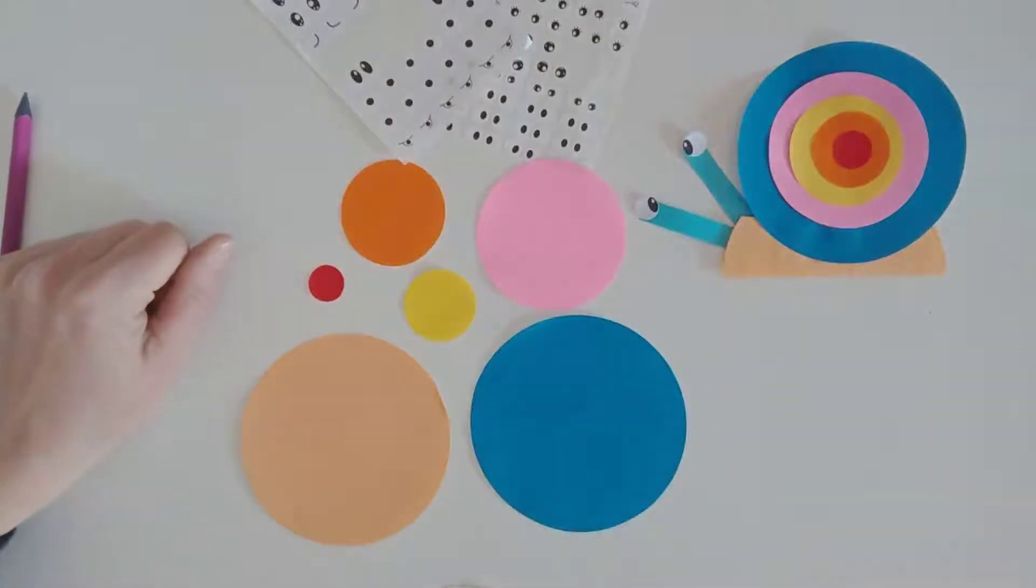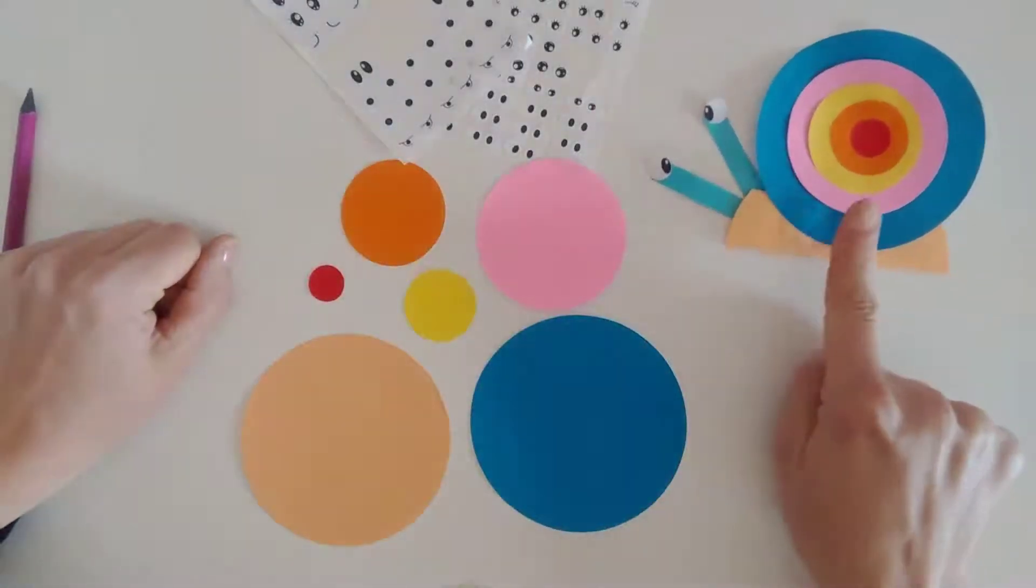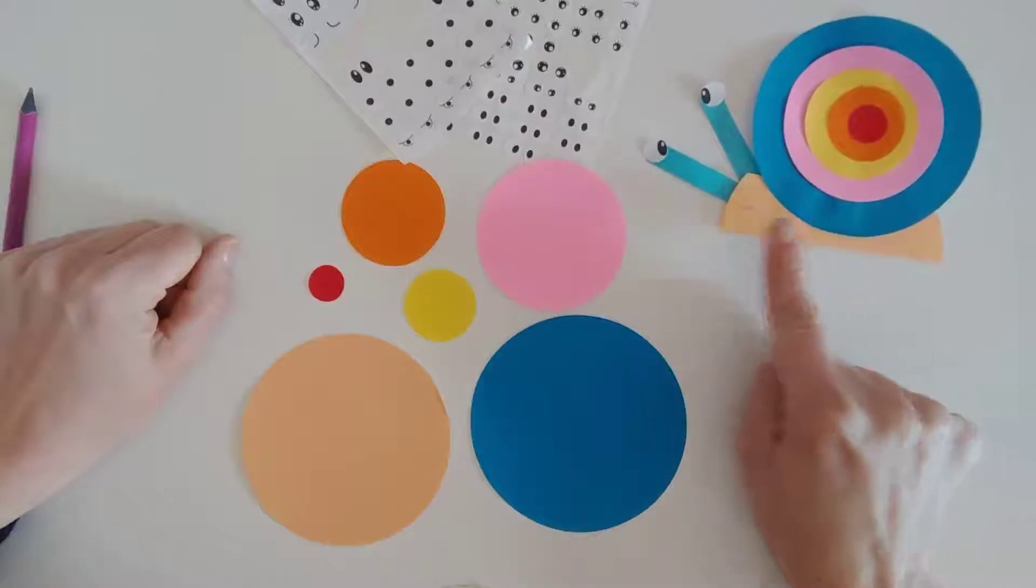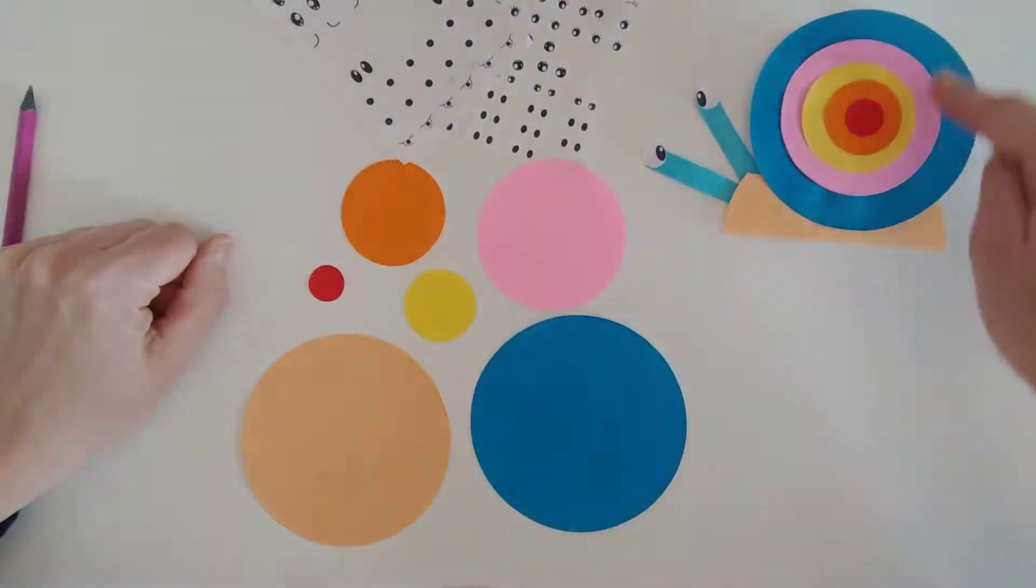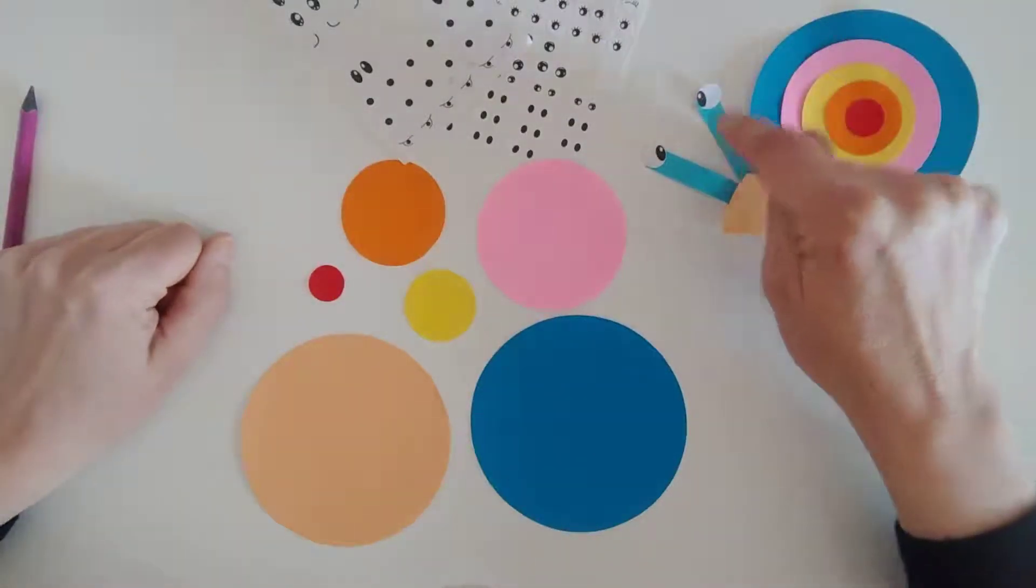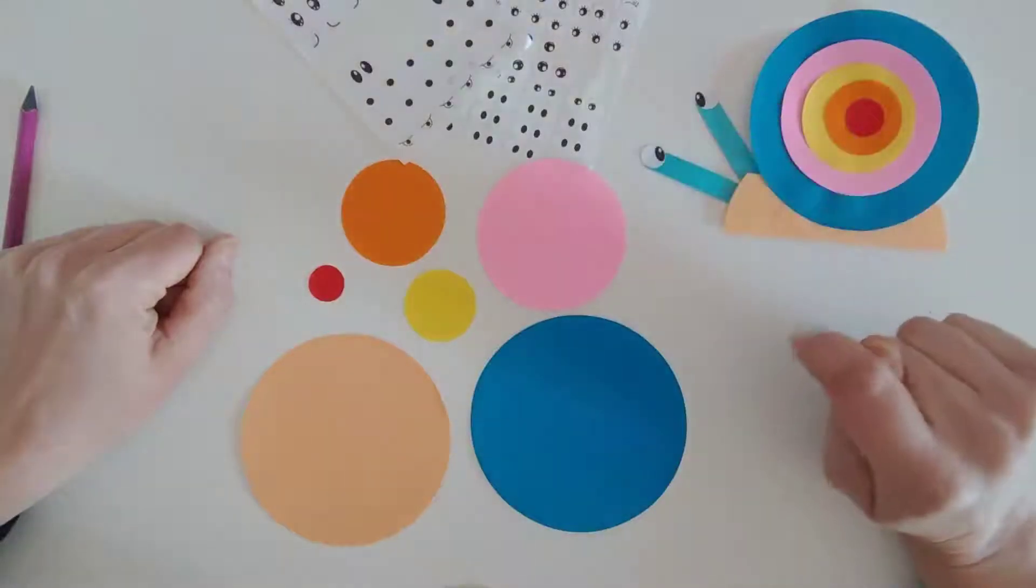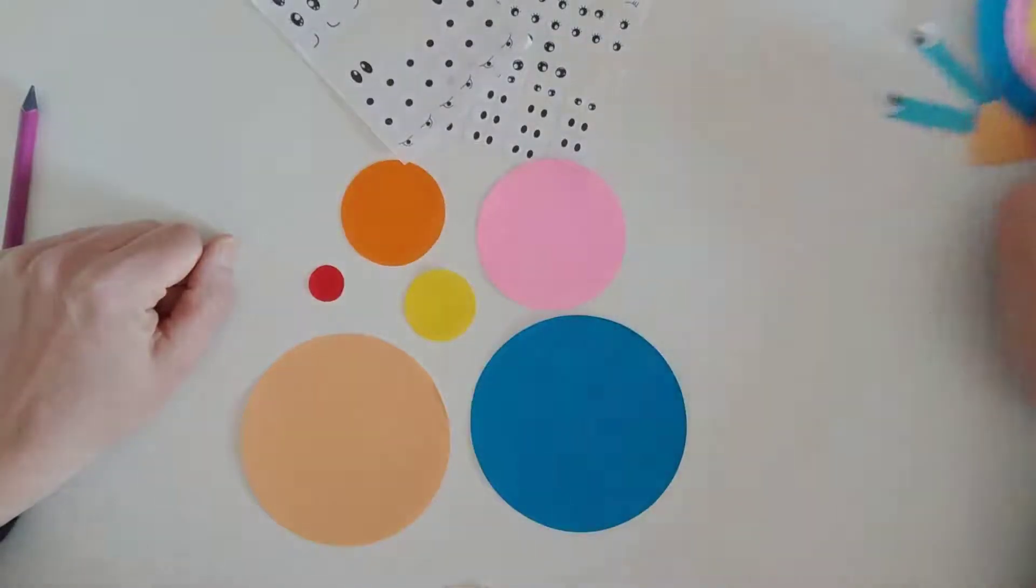Hello. I'm making a snail. The body, the shell, antenna, two eyes. Let's make a snail.